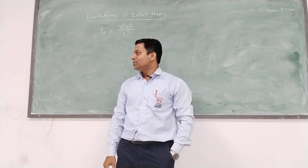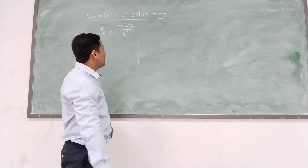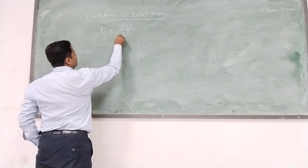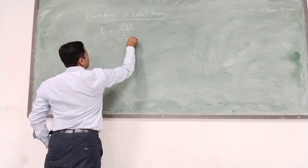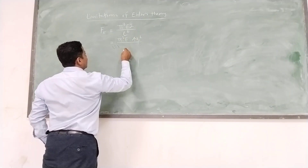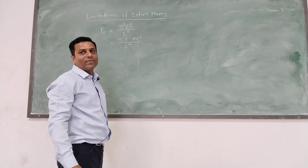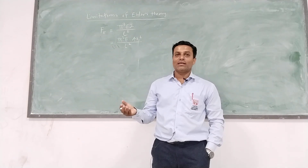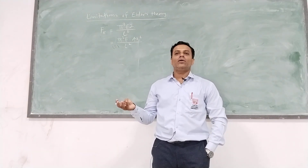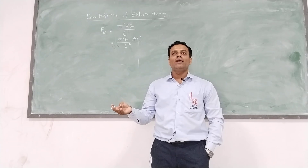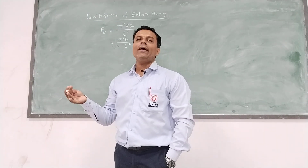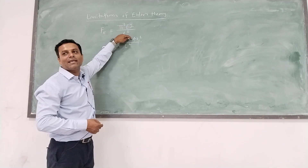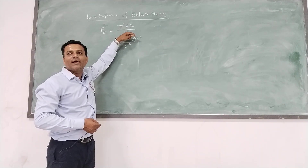Now we will see the limitations of Euler's theory. In this formula we will simplify and make some adjustments. We write π²E, and substitute I = Ak², where I is the moment of inertia, A is the area, and k is the radius of gyration. Moment of inertia can be determined by three formulas: I = mk², I = Ak², or I = bd³/12.